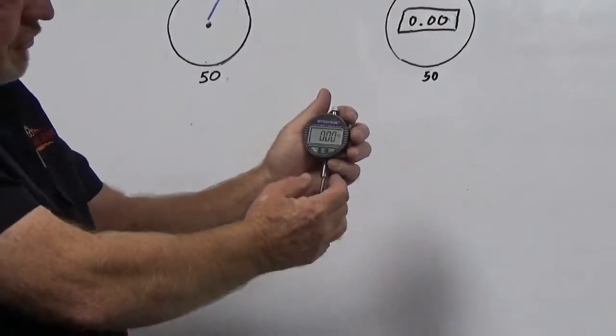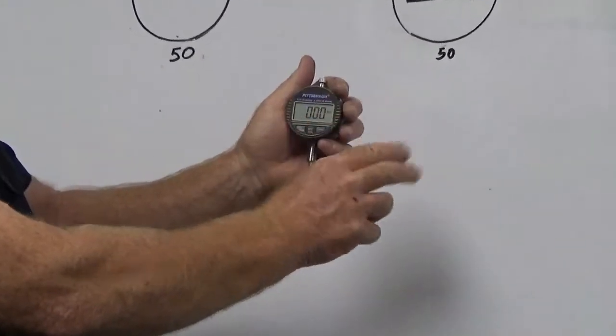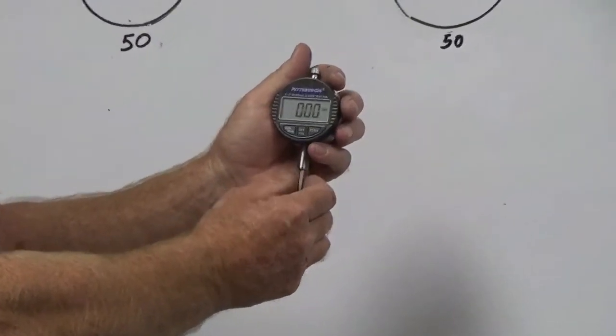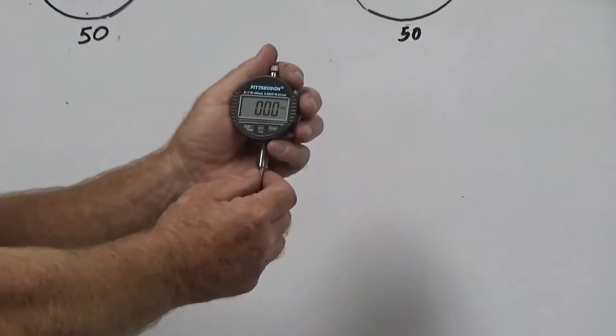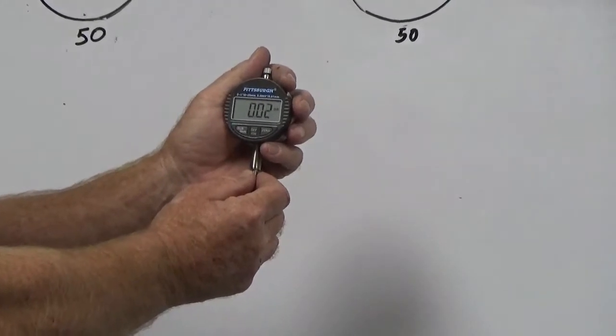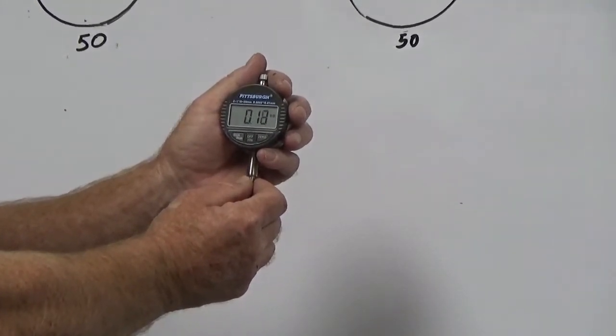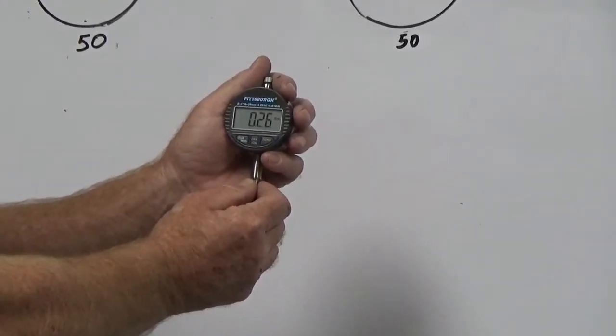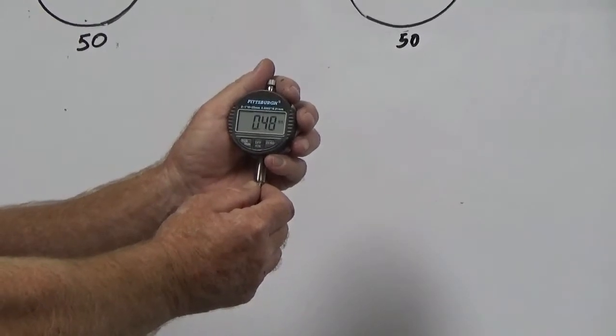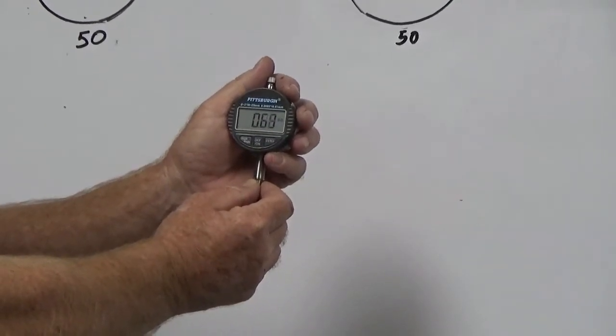I'm going to push the plunger in and we're going to pay attention to our far right two numbers. So as I push this in, let's see how well I can control it. There's 5, there's 13 thousandths, there's 26 thousandths, there's 49 thousandths, 70.